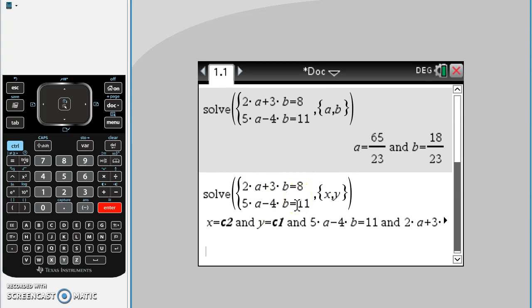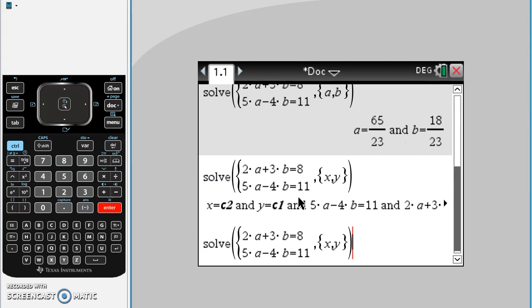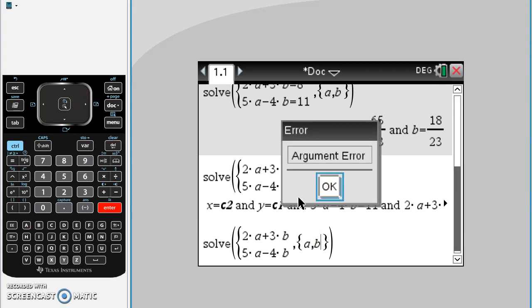The other thing that people sometimes forget to do is they sometimes forget the equals bit in the equation. So if we got rid of that, change it back to a and b, you'll see it says argument error. It's saying it's the wrong sort of argument, you've written expression there instead of an equation.